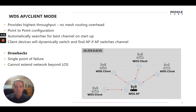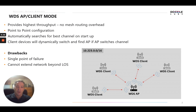For WDS AP Client Mode specifically, which is a star topology — an access point connected to various clients — it does provide higher throughput than mesh because there's no mesh routing overhead. So in a point-to-point configuration where no mesh is required, this would be advantageous. You'd get probably a 10% increase in throughput or so.